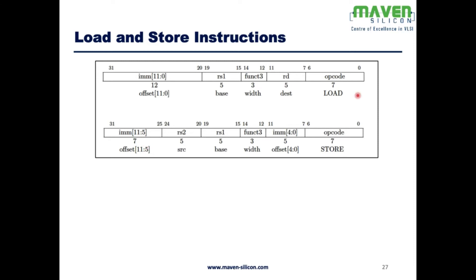We use the load instruction primarily to read the memory — we read a particular location and load the destination register with that value. The address is calculated from both rs1 and the immediate value, so the address is always rs1 plus the immediate value. rs1 is the base; if base is zero, it becomes zero plus the offset defined by bits 11 down to 0. For the store operation, the address is also calculated from rs1 and immediate value, but it additionally involves rs2, which holds the value to be written into memory.